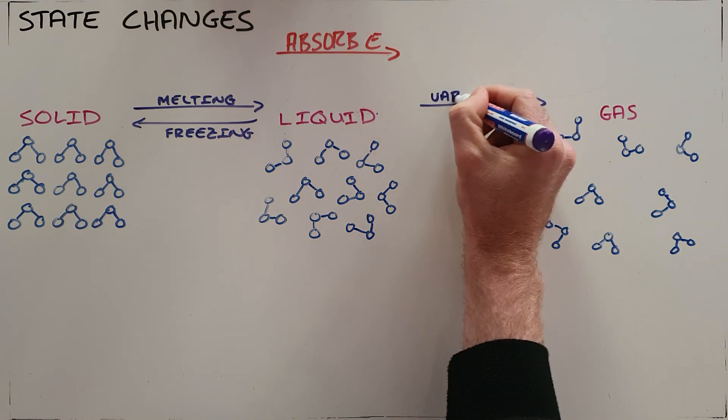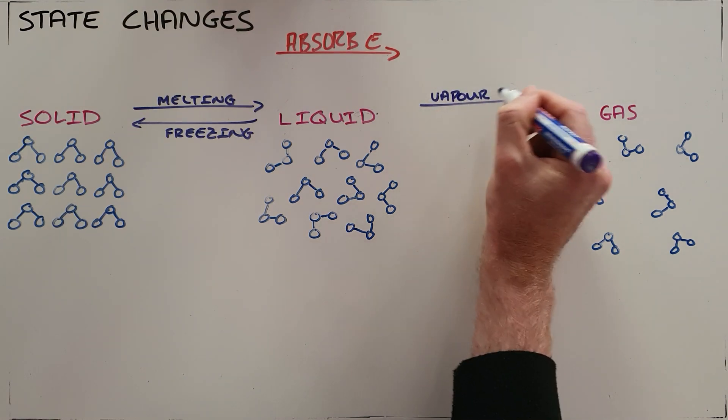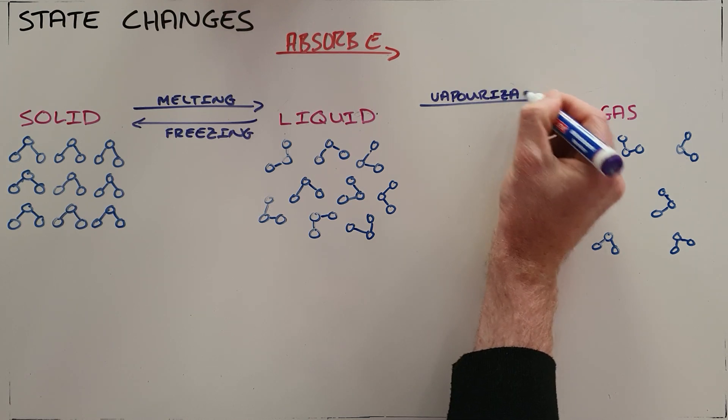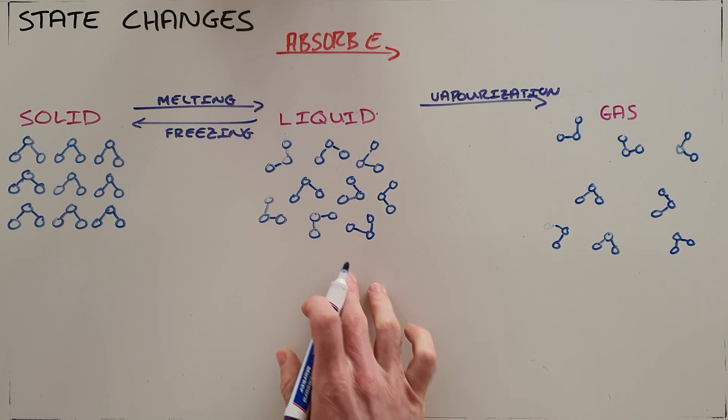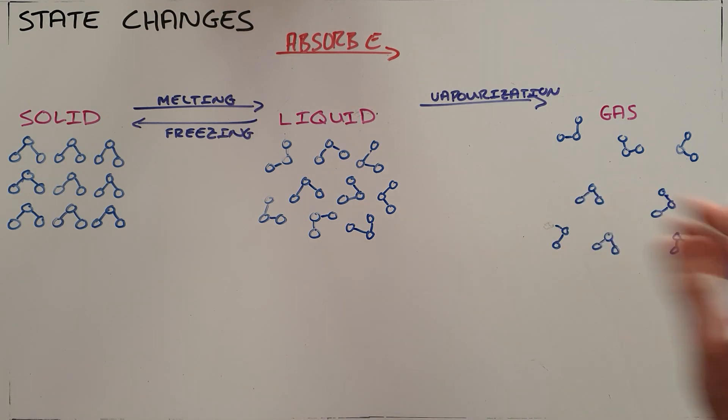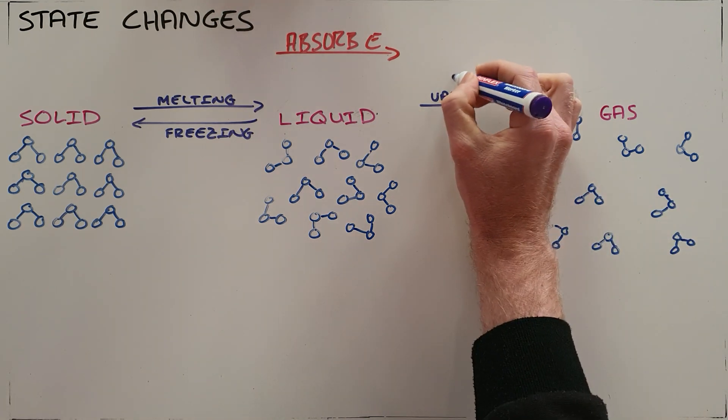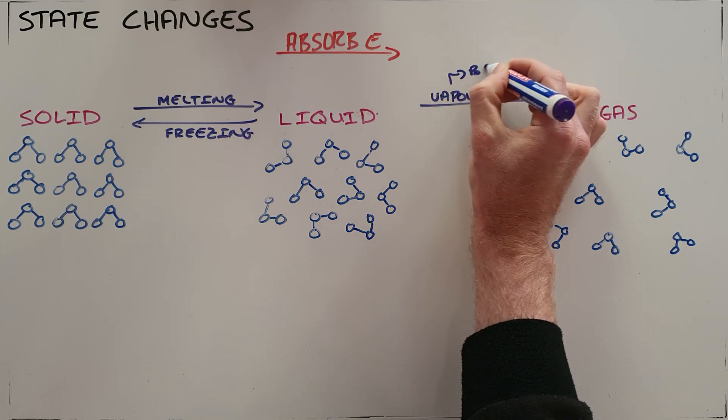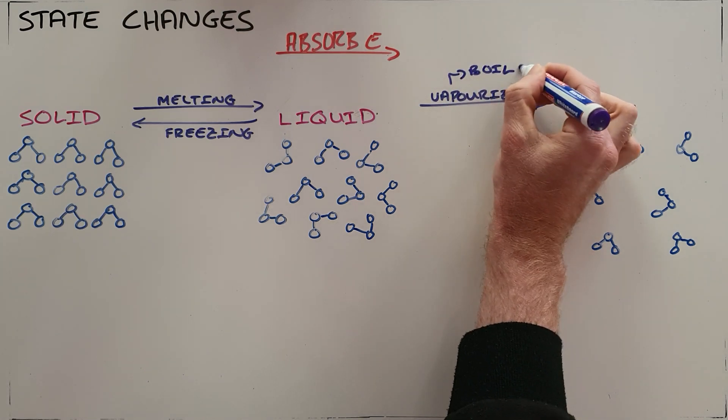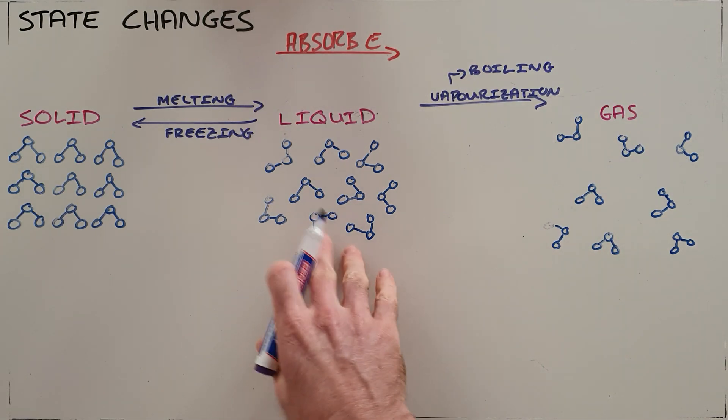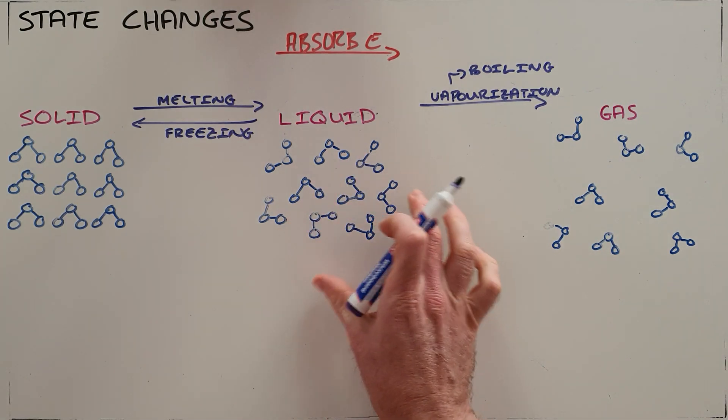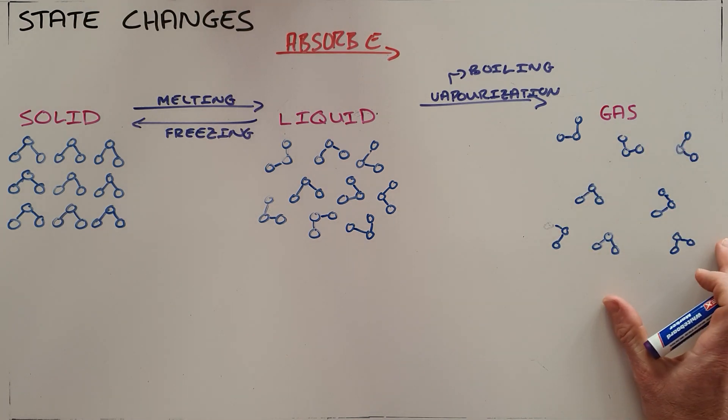We call it vaporization because there are essentially two ways in which this state change can happen. The first one is when it absorbs enough energy and the entire liquid is able to become a gas. We call that boiling, and that is what happens when the liquid reaches what's called the boiling point. So in the example of water, when the water reaches 100 degrees, every single liquid molecule is able to separate and become a gas molecule.